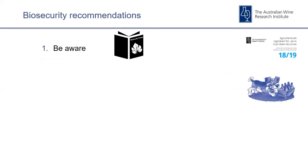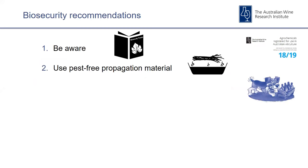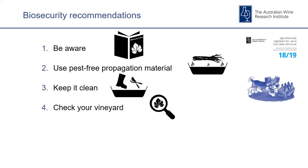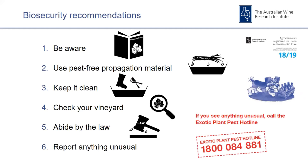The key things around managing biosecurity — listed in the Dog Book published by the AWRI each year — are: be aware of biosecurity threats by consulting the web links with photographs of priority exotic pests; use pest-free propagation material from accredited suppliers; keep it clean and practice standard vineyard hygiene; monitor your vineyard regularly, looking not just for endemic pests but for unusual symptoms; abide by the law, particularly around transporting vine material across state borders; and if you see anything unusual, report it using the 1-800 number.